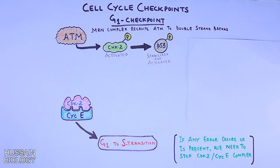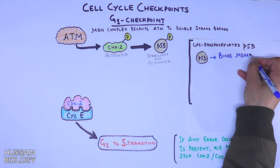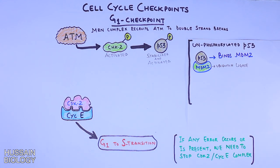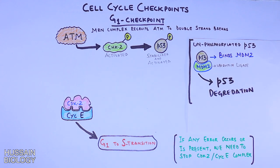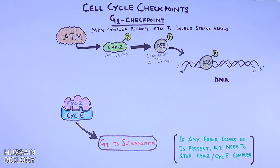CHK2 in turn phosphorylates the p53 protein. A phosphorylated p53 protein is stable and active. In contrast, unphosphorylated p53 binds to MDM2, an E3 ubiquitin ligase that marks p53 for degradation, allowing the cell to proceed into the next phases when there is no damage. When DNA damage is present, p53 is phosphorylated and stabilized by the above mechanism, as shown in the diagram.